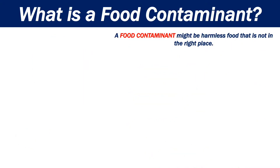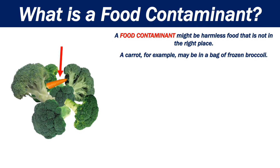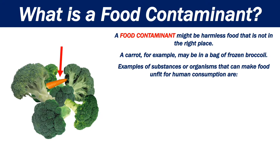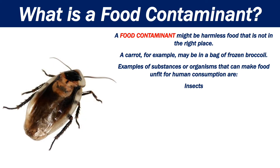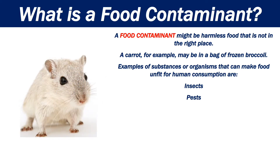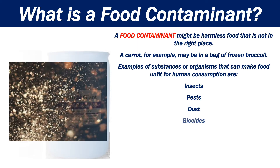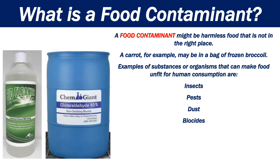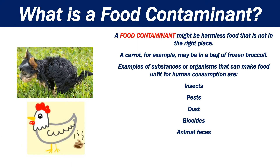A food contaminant might be harmless food that is not in the right place. A carrot, for example, may be in a bag of frozen broccoli. Examples of substances or organisms that can make food unfit for human consumption are insects, pests, dust, biocides, and animal feces.